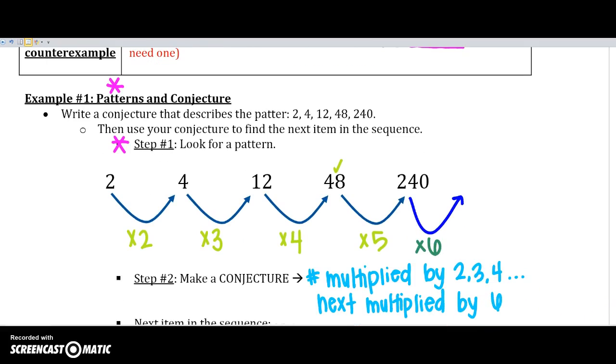All right, so the conjecture is a statement. So after you have found your pattern, step 2 is you're going to make a statement about your pattern. So the number is multiplied by 2, 3, 4, so on and so forth. So the next item will be multiplied by 6.